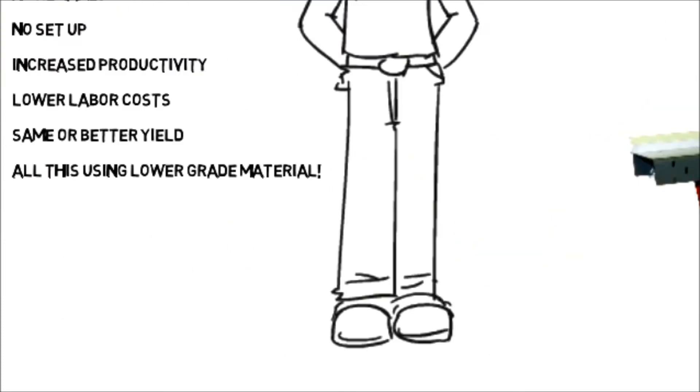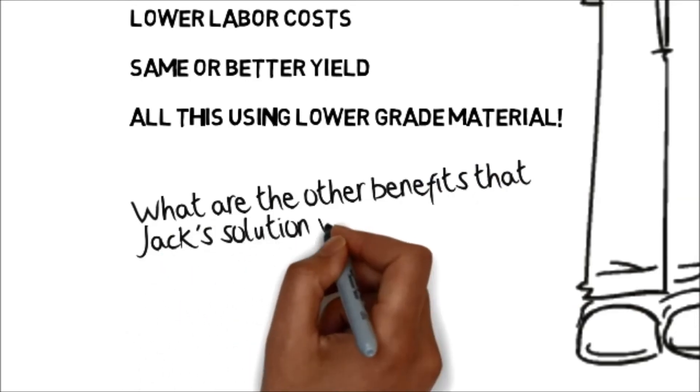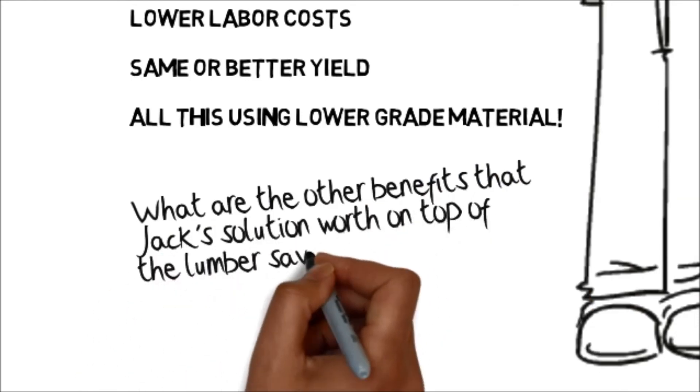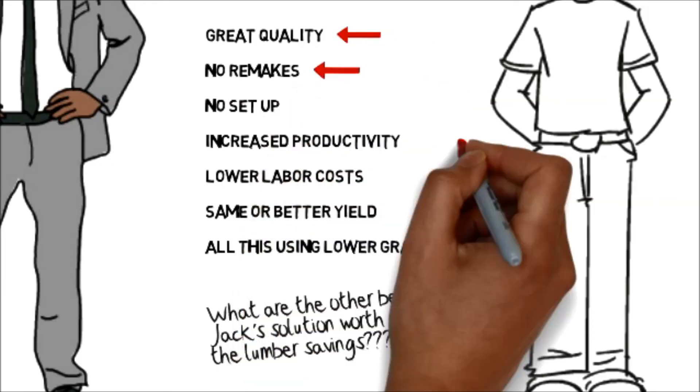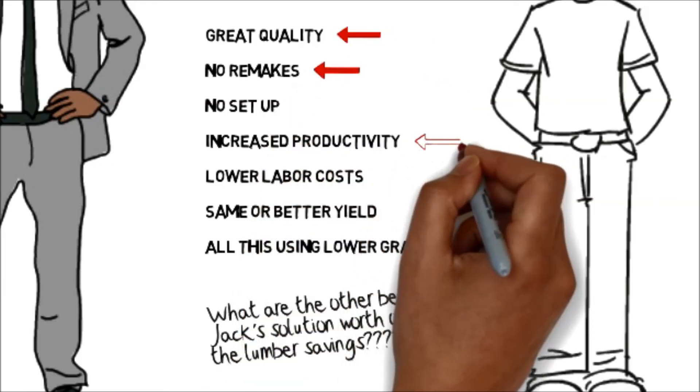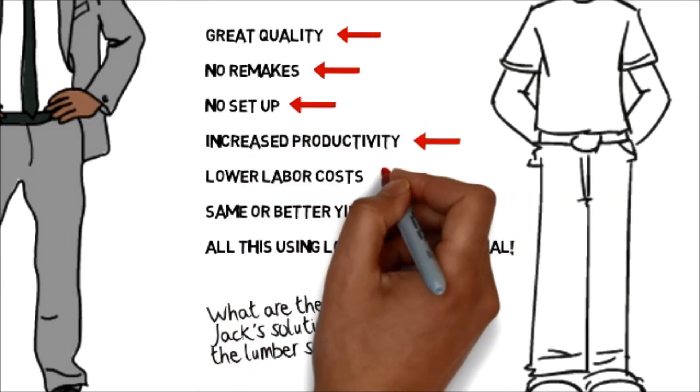Jack had given Noah a lot to think about. If a Tiger Stop system could do all that Jack had said, letting him keep his customers happy and stopping his profits from going down the drain and let him use lower grade materials that cost 30% less, he just might be home in time for dinner with the kids.